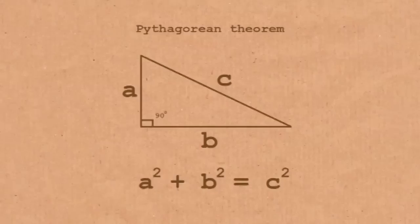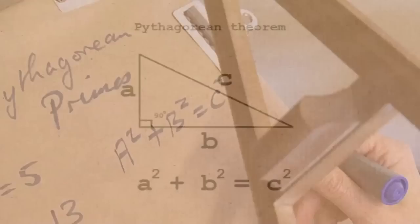Now, of course, a and b don't have to be integers, and c doesn't have to be an integer. They can be any number. This can be 3.2 inches, this can be 5.75 inches, whatever c is then. But we can play this game with integers, and when we do, we generate these Pythagorean primes.